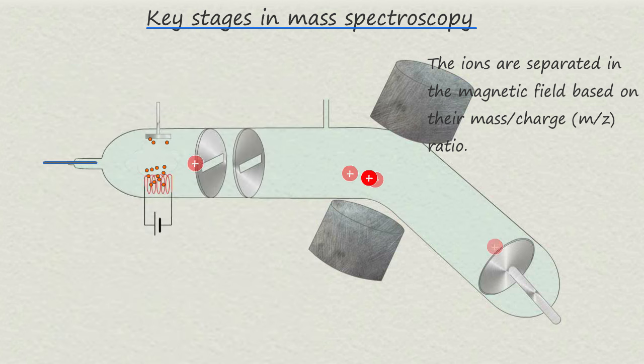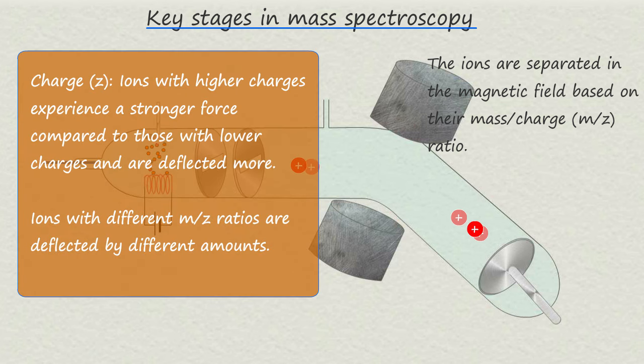And the second factor is the charge on the ion. Ions with higher charge experience a stronger force from the magnet compared to those with lower charges and are deflected more.